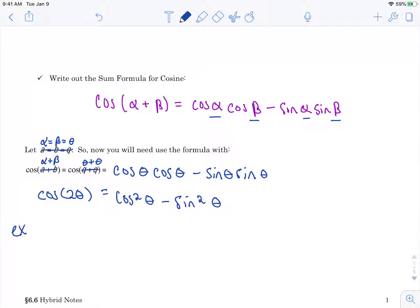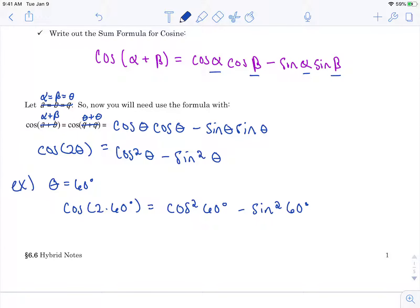So let me show you what this looks like. Say I had my theta is 60 degrees. So cosine of 2 times 60 degrees equals cosine squared of 60 degrees minus sine squared of 60 degrees. Take a peek at our unit circle and we see that cosine of 60 is 1 half and I square it, and sine of 60 is root 3 over 2 and I square it. So I get 1 fourth minus 3 fourths and I end up getting negative 2 fourths which reduces to negative 1 half.